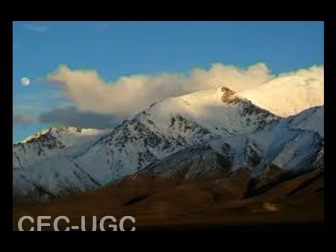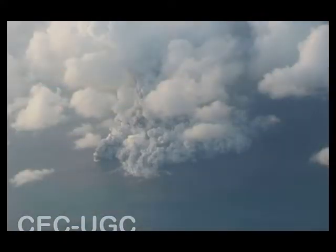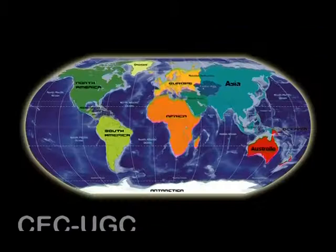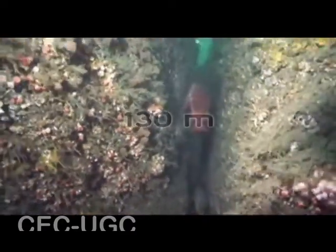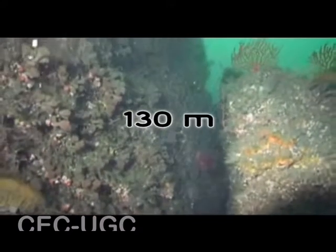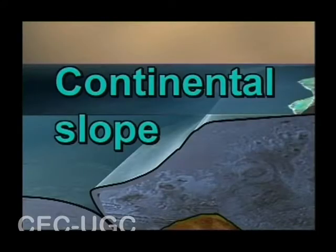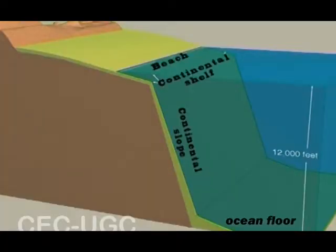The ocean floor is a region of spectacular morphology and contrasting relief features in the Pacific. Beneath the sea there are broad plains covering huge distances, towering mountain chains, undersea volcanoes, deep trenches, and valleys. The continental shelf is the submerged land at the edge of the continents, beginning at the shoreline and gently sloping underwater to an average depth of about 130 meters. The width of the continental shelf averages 75 kilometers, with the edge occurring at a depth ranging from 20 to 550 meters.